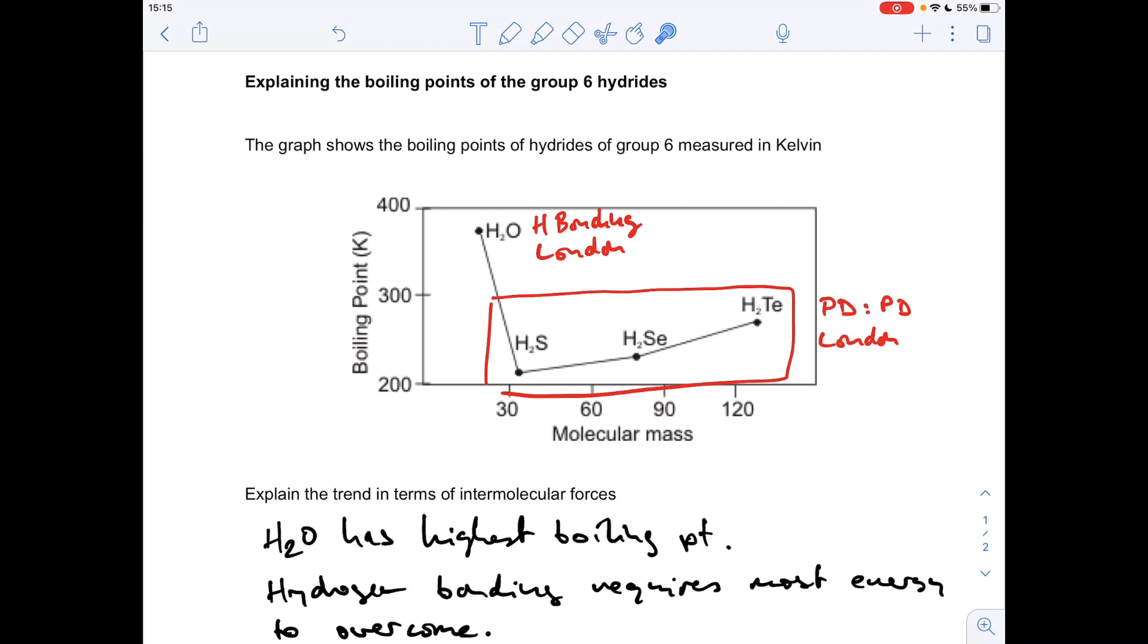So the increase in boiling point has got to be due to the strength of the London forces. The number of electrons in the molecules is increasing as you go down the group. And so therefore the strength of the London force is increasing, and that means more energy is needed to overcome them.